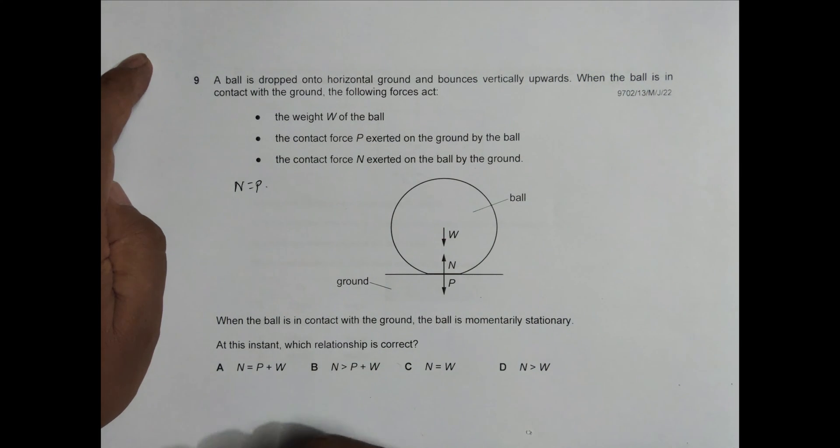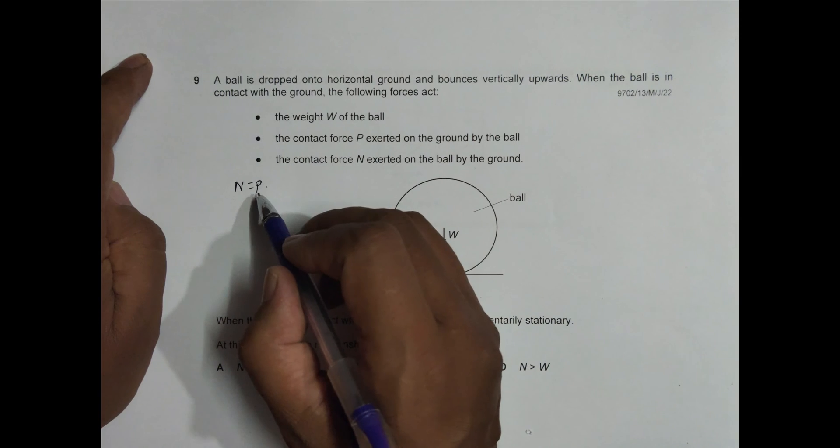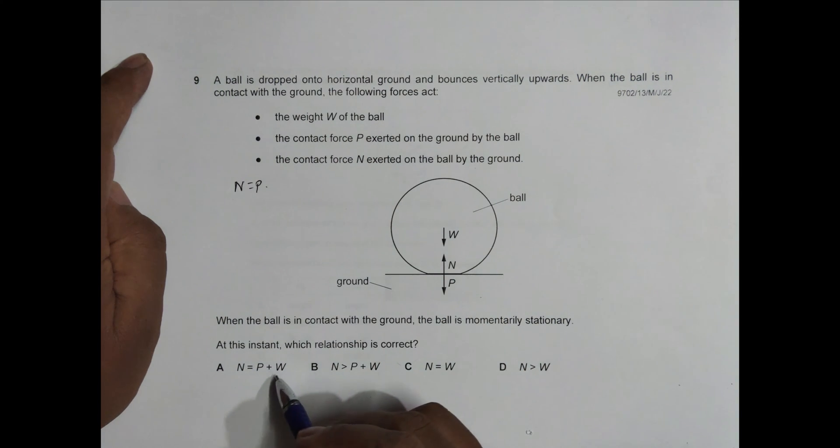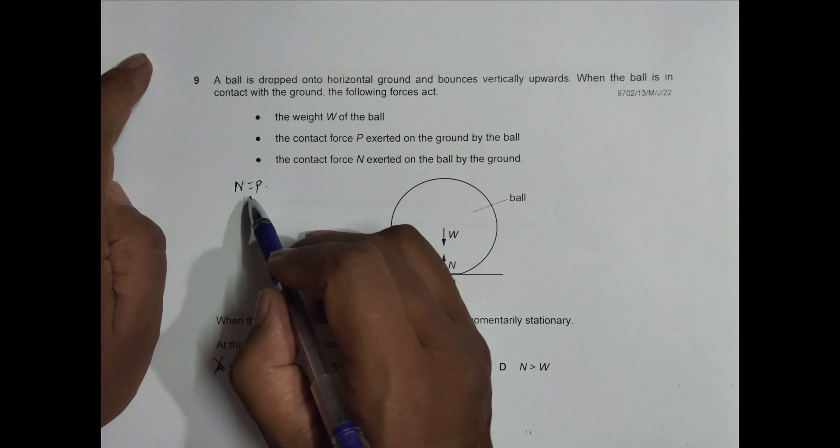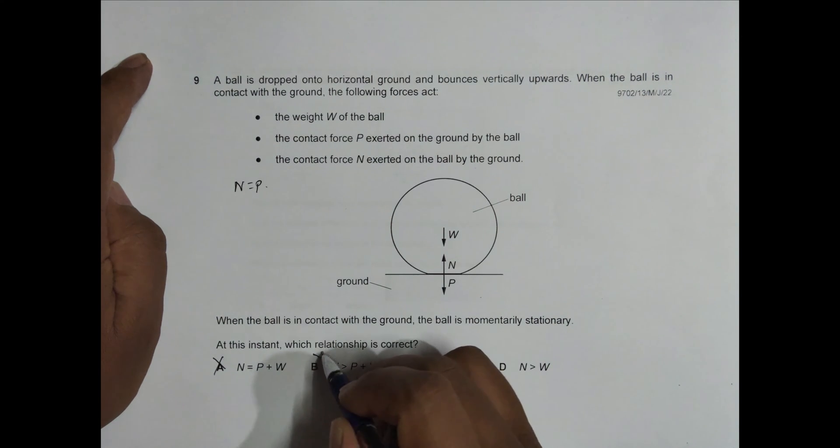The first one says N equals P plus W, but we have N equals P, so N equals P plus W is not correct. Next is N is more than P plus W. Again, not correct because N equals P, so we can't have this also.